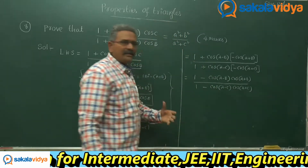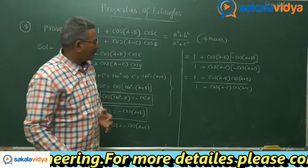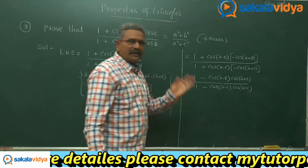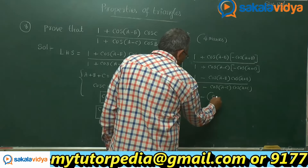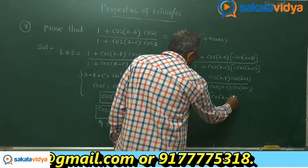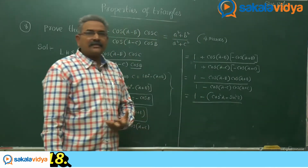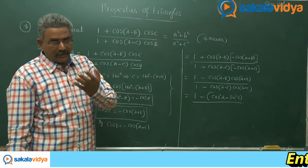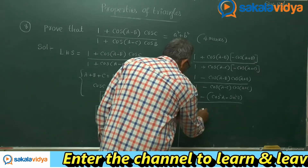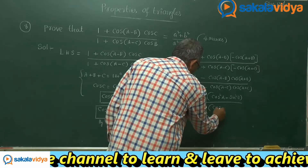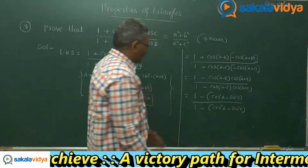Cos of (a minus b) into cos of (a plus b) is one of the formulae in compound angles — this equals cos squared a minus sin squared b. Similarly, 1 minus cos of (a minus c) times cos of (a plus c) gives cos squared a minus sin squared c. So the expression becomes 1 minus (cos squared a minus sin squared b), upon 1 minus (cos squared a minus sin squared c).